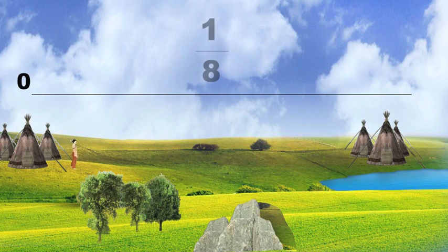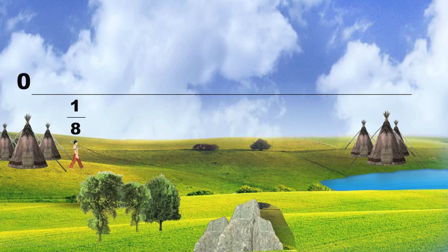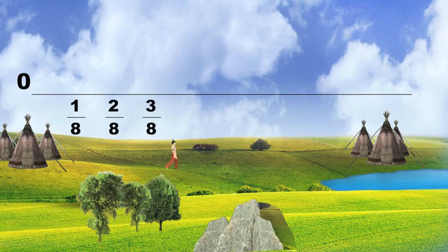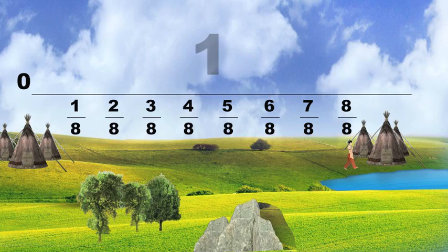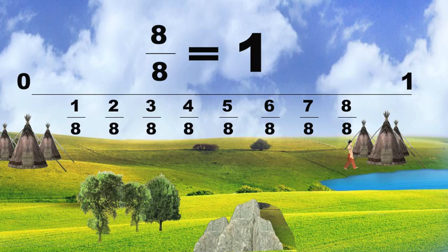After one day, you've walked 1 out of 8 days, so you've walked 1 eighth of the way to the camp you're going to visit. When you've traveled 8 eighths of the way to the next camp — that is, you've traveled 8 out of 8 days between the two camps — then you've made one whole trip. 8 eighths equals 1.